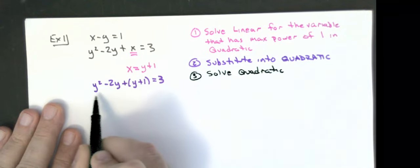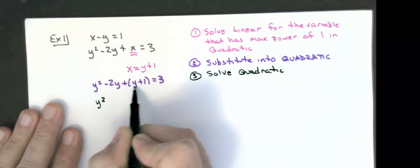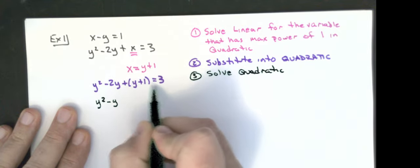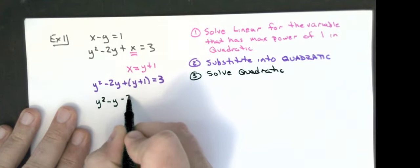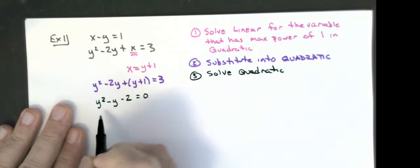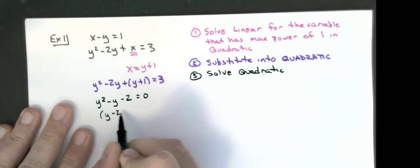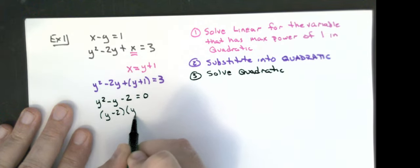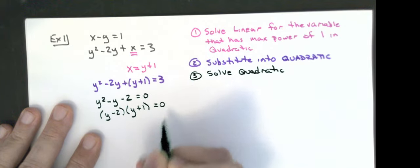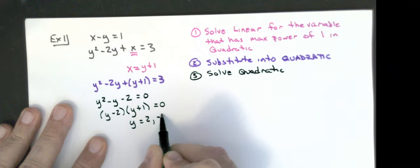So I take y squared minus 2y plus x, substituting x as y plus 1, equals 3. Then I solve the quadratic equation. So I have y squared minus 2y plus 1y, which is minus y, and 1 minus 3 is negative 2. I'm going to factor this — two numbers that multiply to negative 2 and add to negative 1 are negative 2 and positive 1. I get y equals 2 or negative 1.